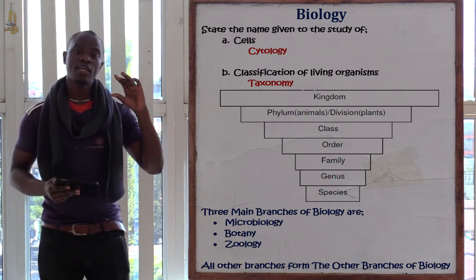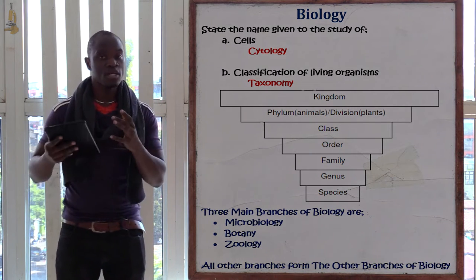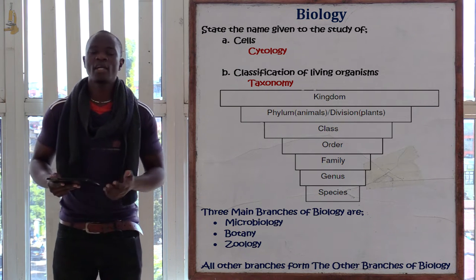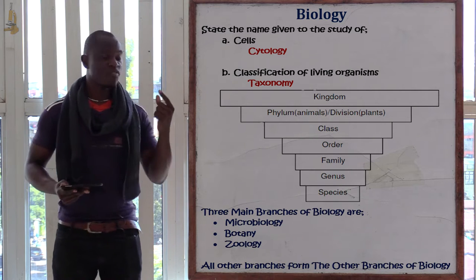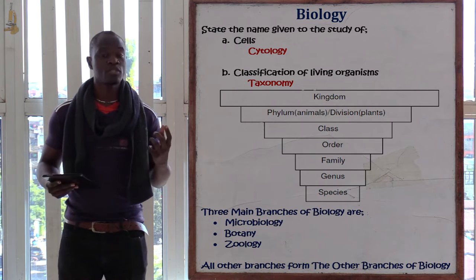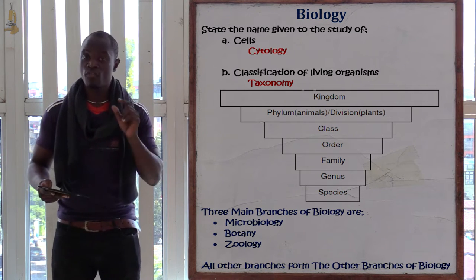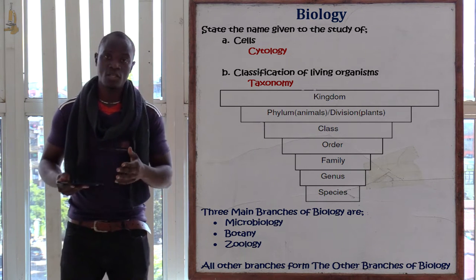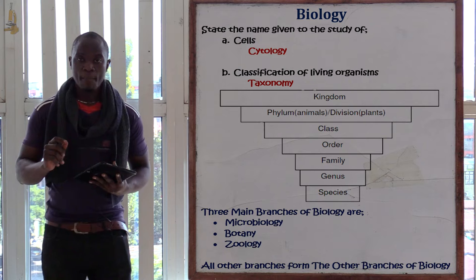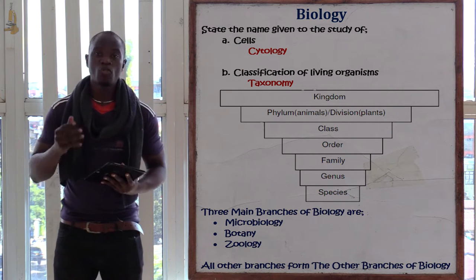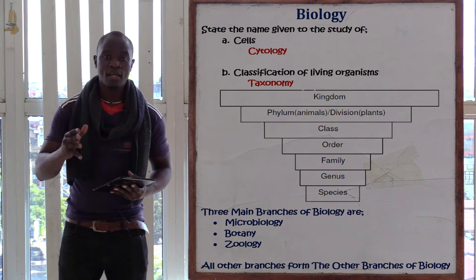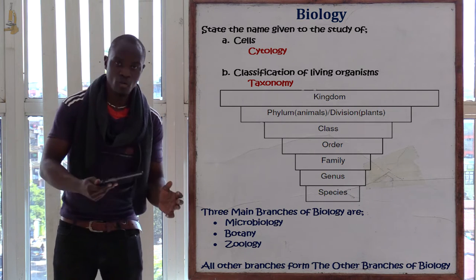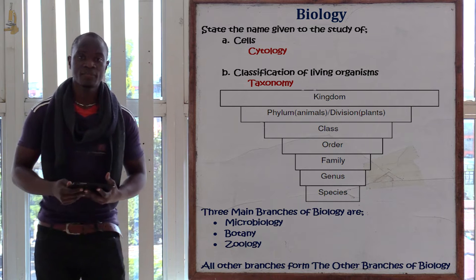After kingdom, we have phylum or division. If you have been asked to list the hierarchy of classification and you omit either phylum or division, you are going to get it wrong. When writing the hierarchy of classification, you must list them as they are: phylum or division. You must write both because phylum refers to animals, and division refers to plants.